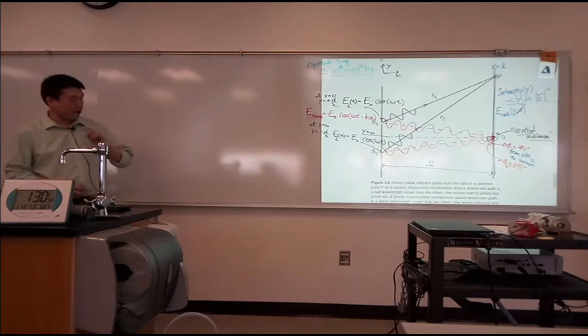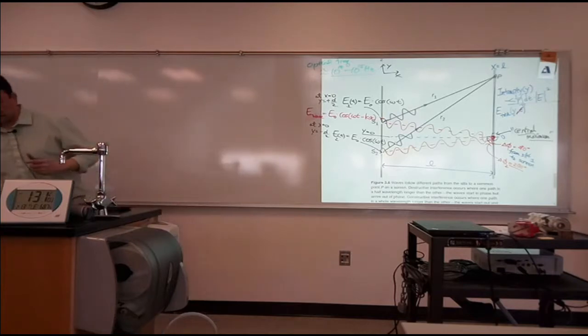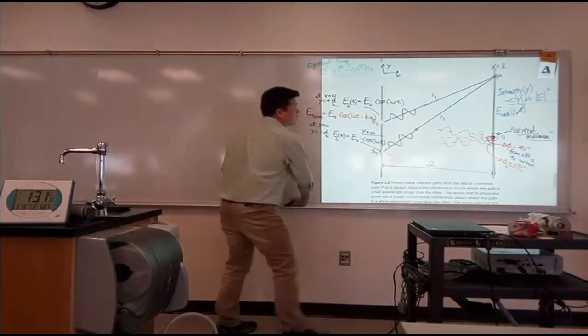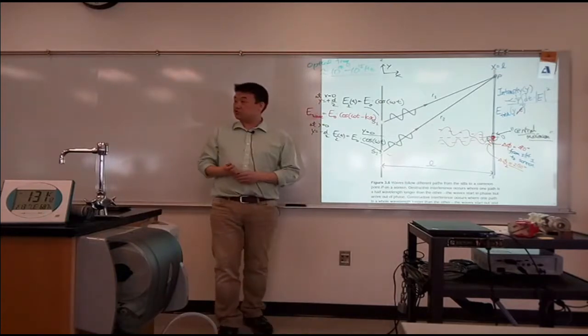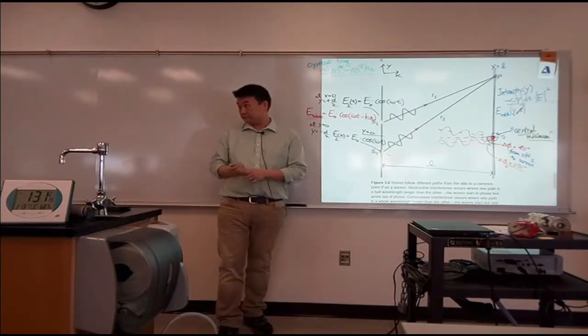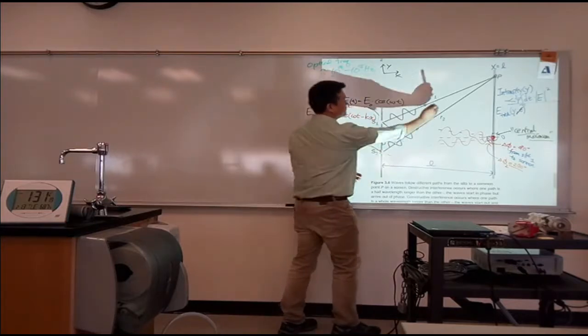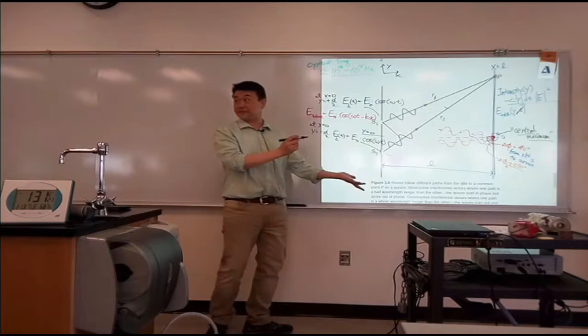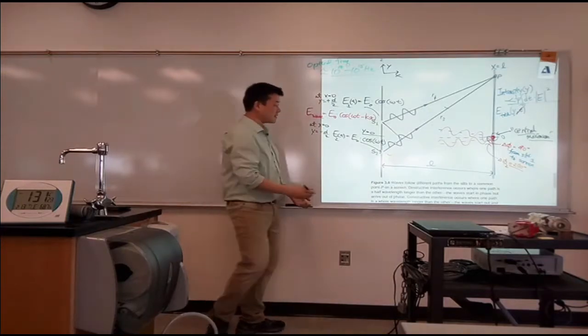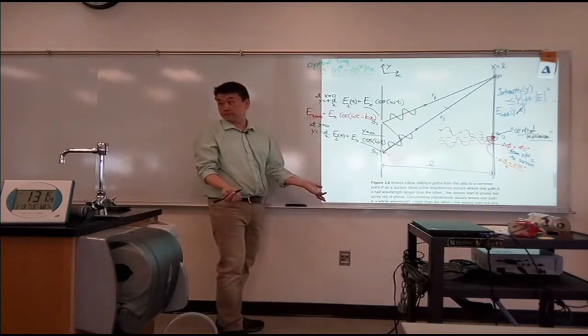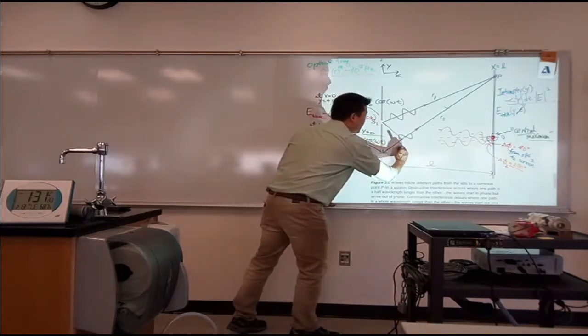So this is the picture I want you to imagine. Let me erase some of the stuff I drew because they are in the way. So this is what I want you to consider. I'm going to imagine drawing an isosceles triangle. So like something like this. These two have the same length. Good?